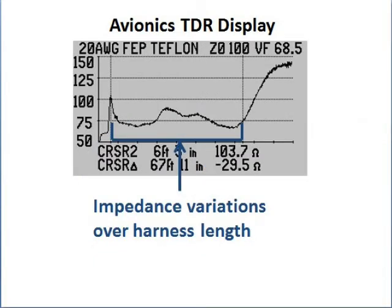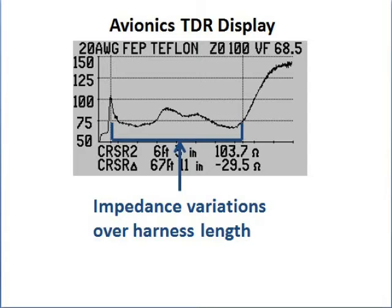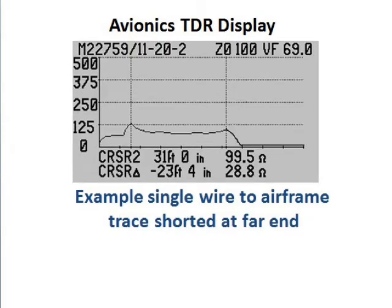The next trace shows more dramatic impedance variations that can exist in a harness and still be normal. Our third trace shows a single wire to airframe measurement open at the far end. And the next trace is the same wire now shorted to the airframe — note the downward excursion at the far end.